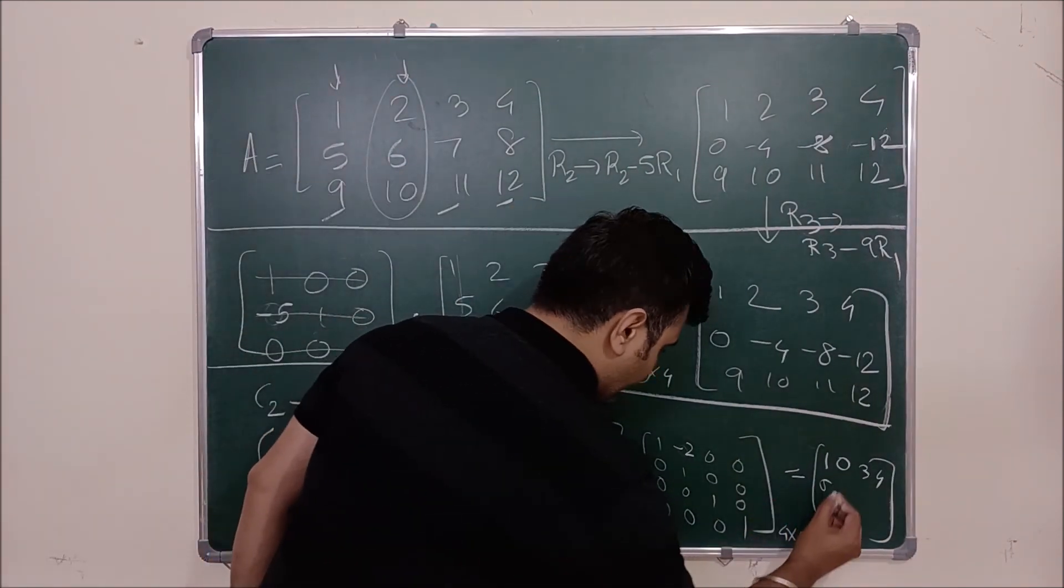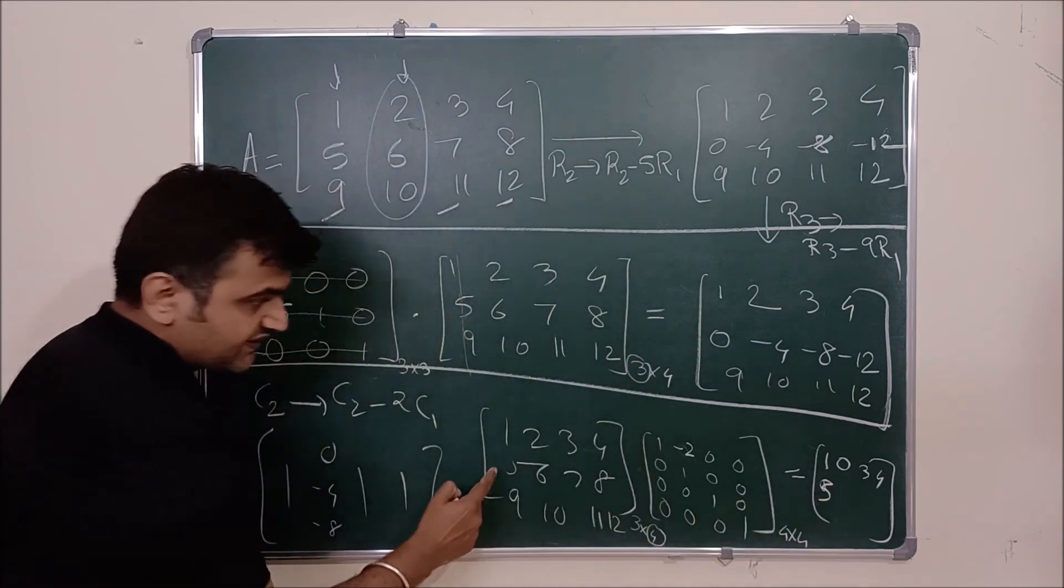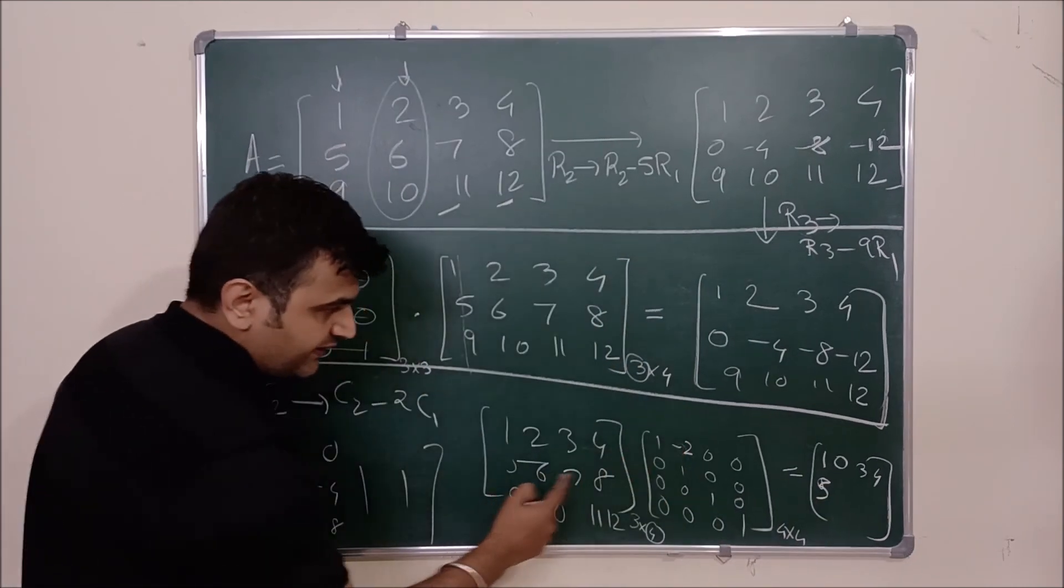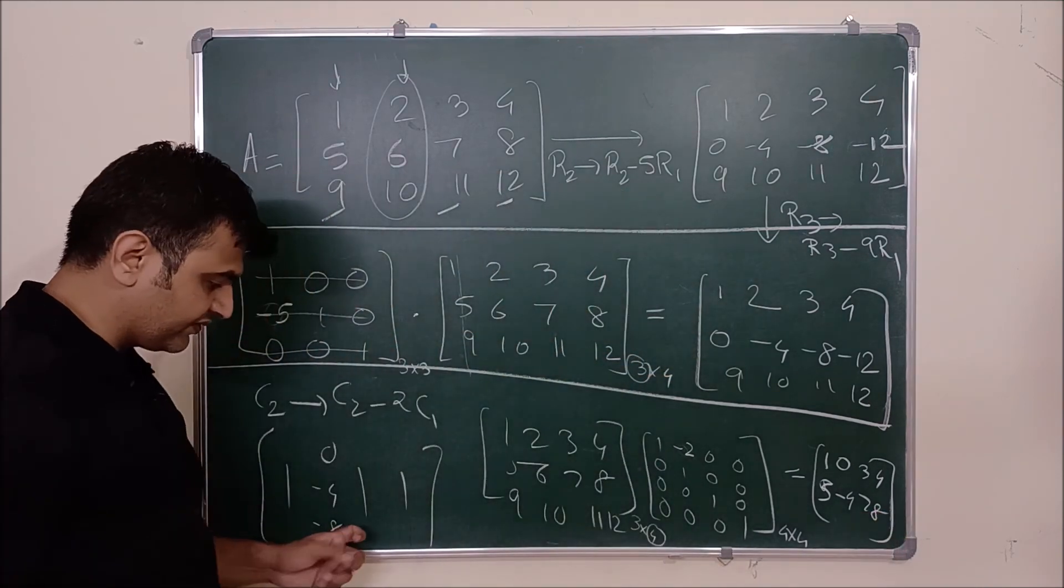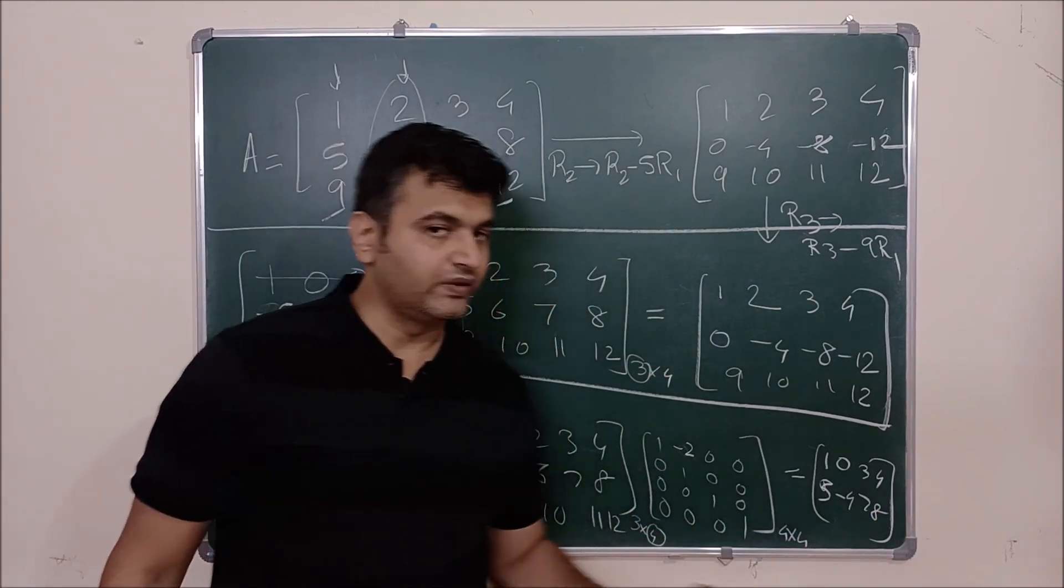Again if you try this is your 5. What is this? 5 into minus 2 is minus 10 plus 6 minus 4, 7, 8. You will observe that you will get the same answer over here.